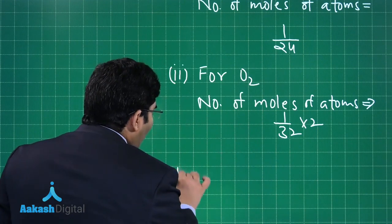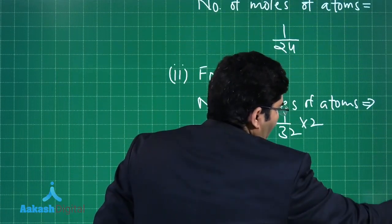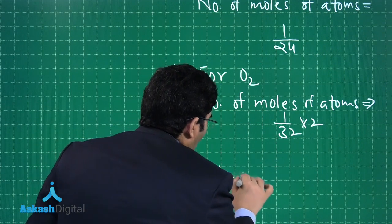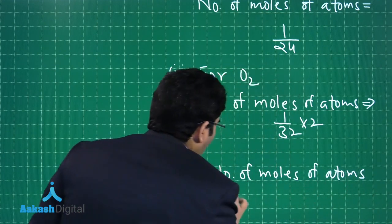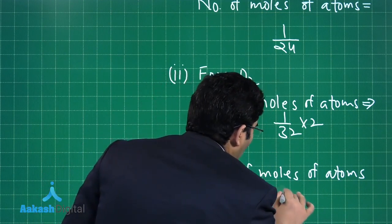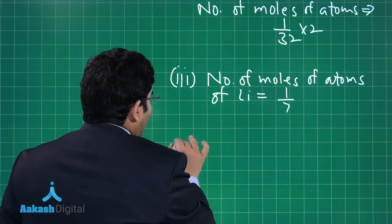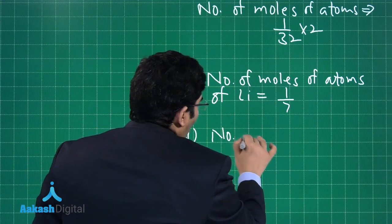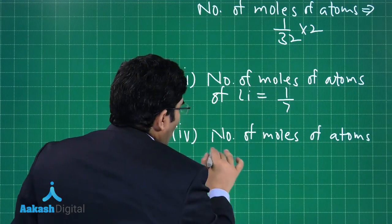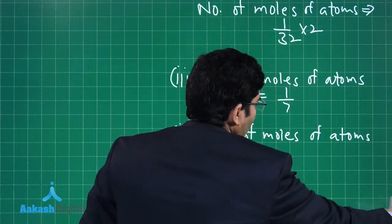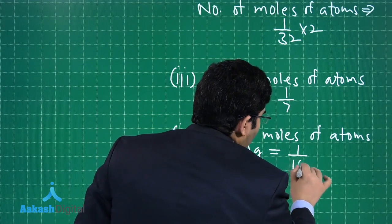Third one is lithium. So it will be number of moles of atoms of lithium that will be equal to 1 upon 7. And the last one is number of moles of atoms of the last one is silver. So it is Ag and that will be equal to 1 upon 108.